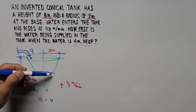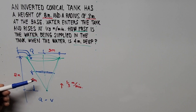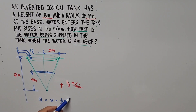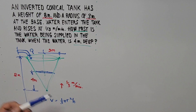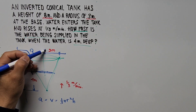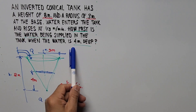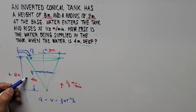Once it's poured in, it adapts to the curvature or internal configuration of the conical tank. The formula for volume is one-third pi r squared h, where r stands for the radius of the base and h stands for the height of the cone — so here the height is 8 and the radius is 3. The condition is when the height is 4.